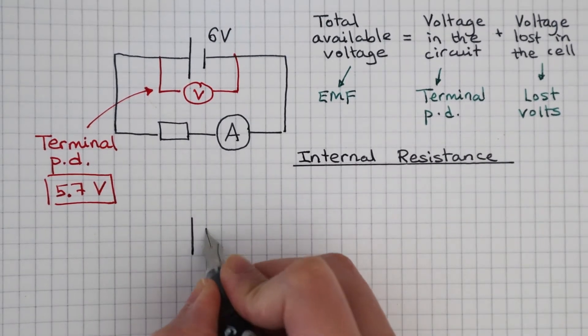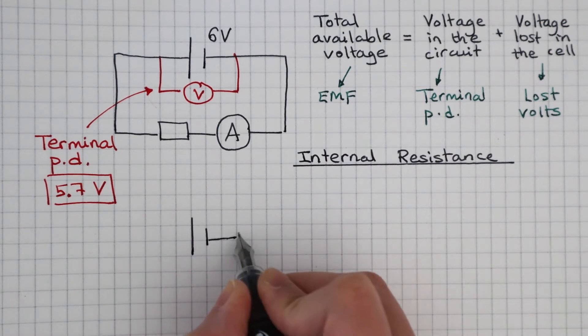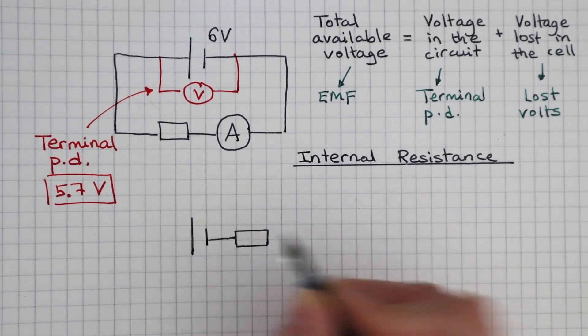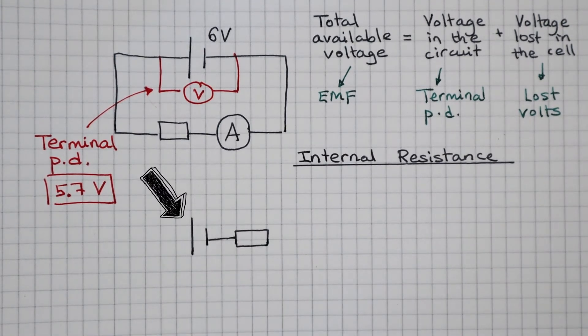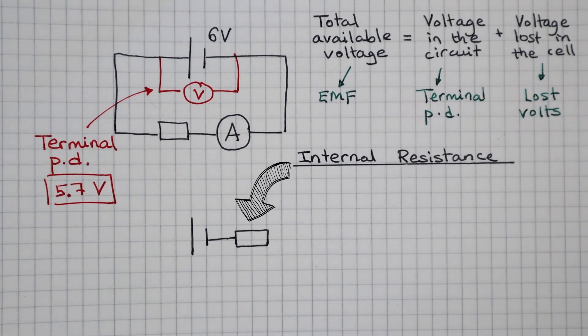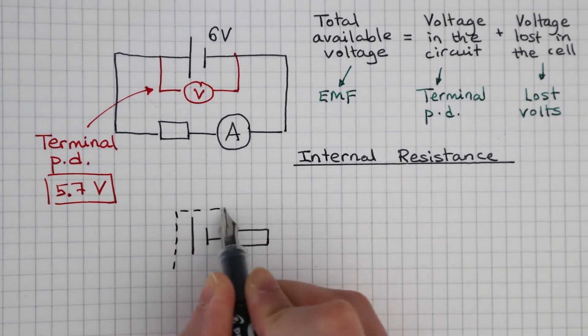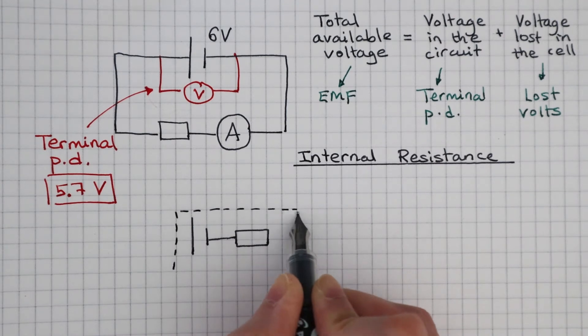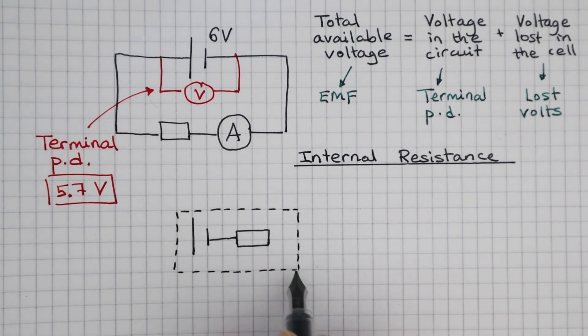So we can redraw our diagram of a cell to include the idea of internal resistance. Here is a perfect cell, and here is the internal resistor. Everything in this box represents a cell with internal resistance.